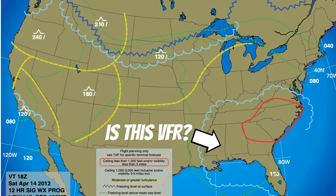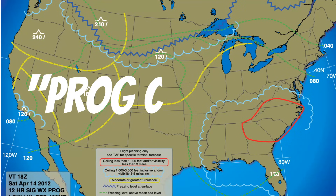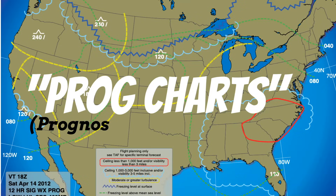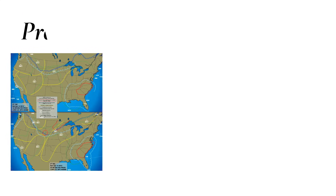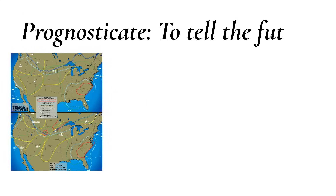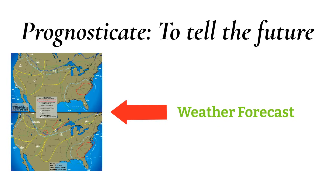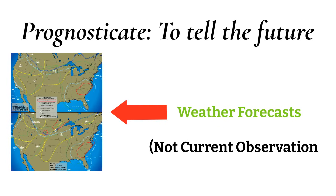Before we break down these charts, I want you to take note of what these charts are called: prog charts. That stands for prognostic. To prognosticate means to tell the future, and that's important to keep in mind because these are weather forecasts, not current observations.